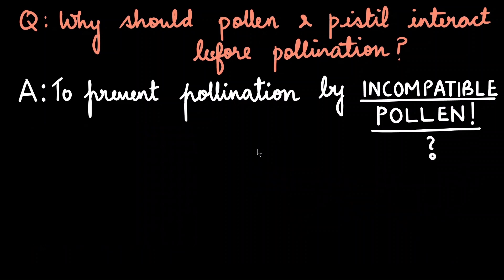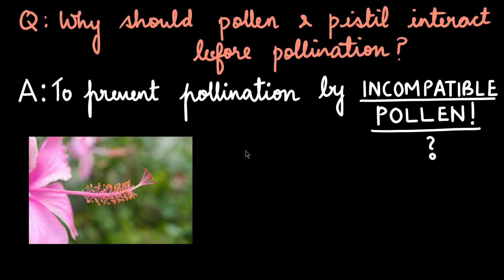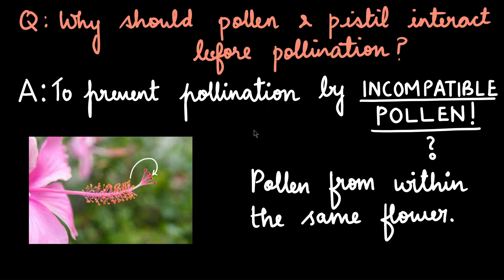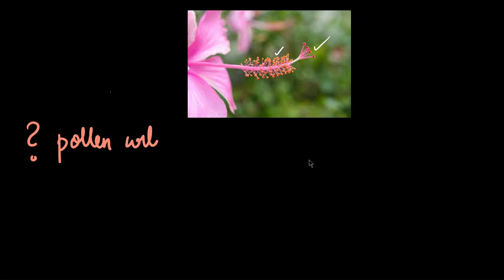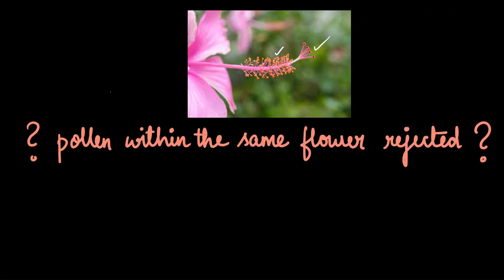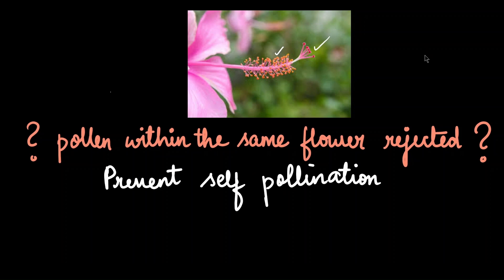The other scenario is a little tricky. Sometimes the pollen from the same flower, if it falls on the stigma, could also be considered an incompatible pollen. It is quite tricky because this is the simplest type of pollination that can happen — the stigma and the pollen are right there. But the flower may reject it to prevent self-pollination and promote cross-pollination.